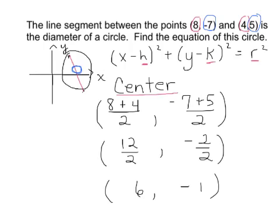Now we need to find the radius. The radius is going to be the distance from the center out anywhere to the circle, but in this case we just found the center and the two endpoints of the diameter would be on the circle. So we could find the distance from the center we just found, (6, -1), to either of the two points. I'm going to work with the (4, 5).